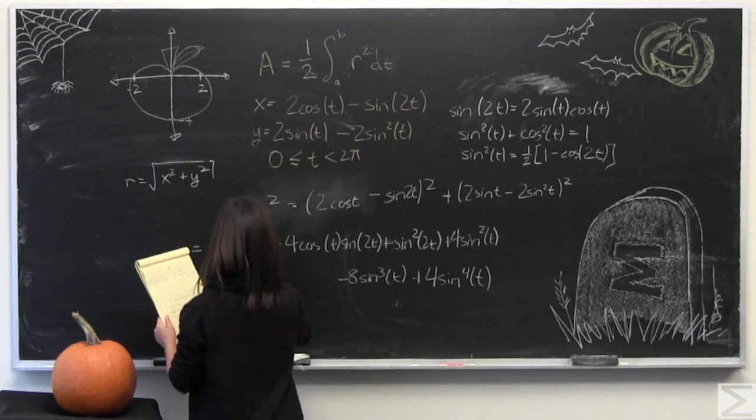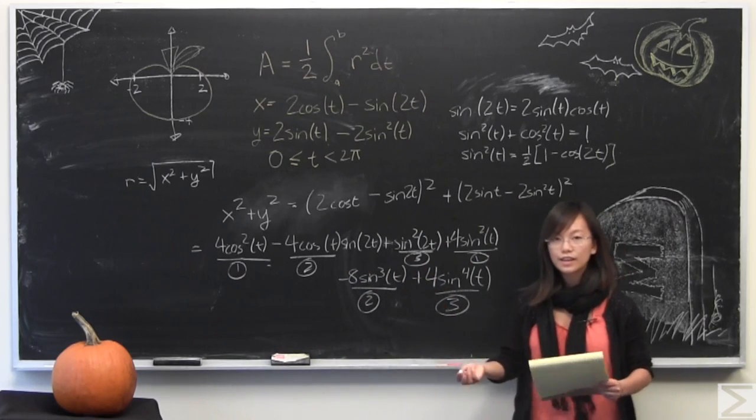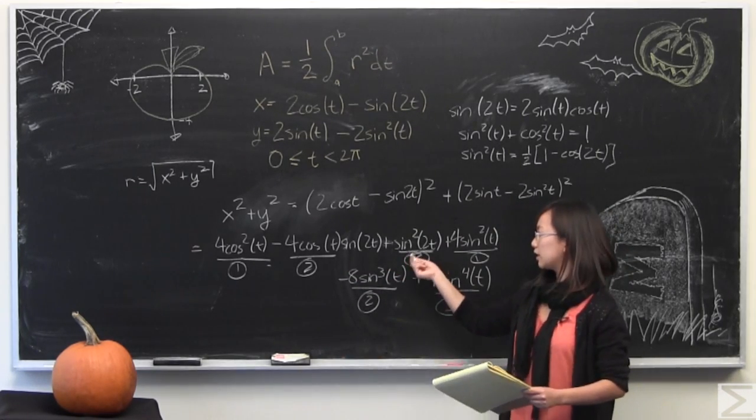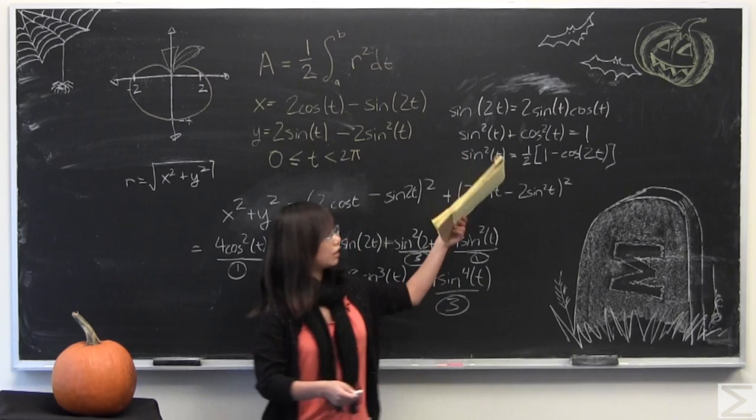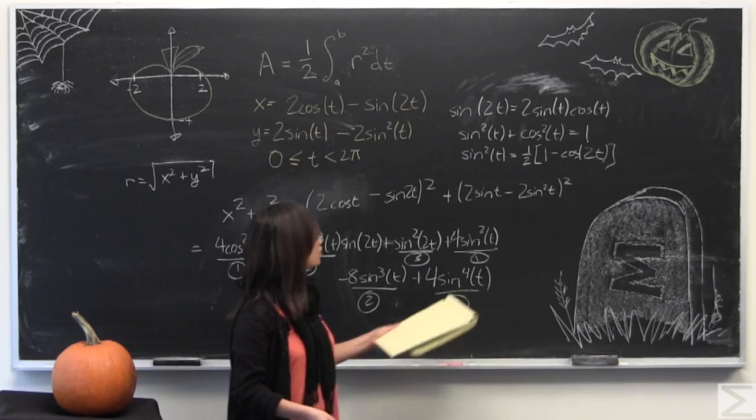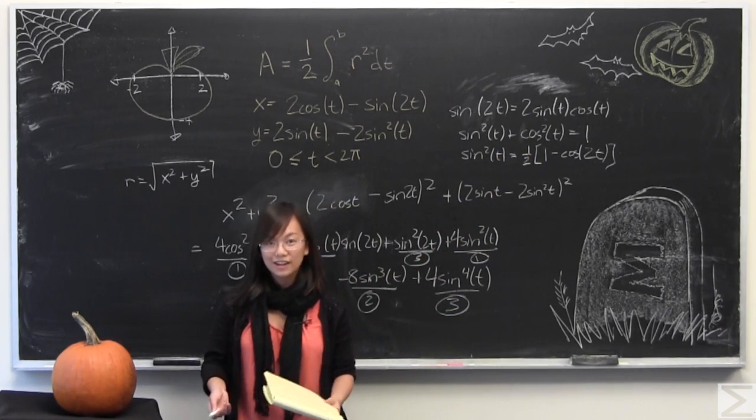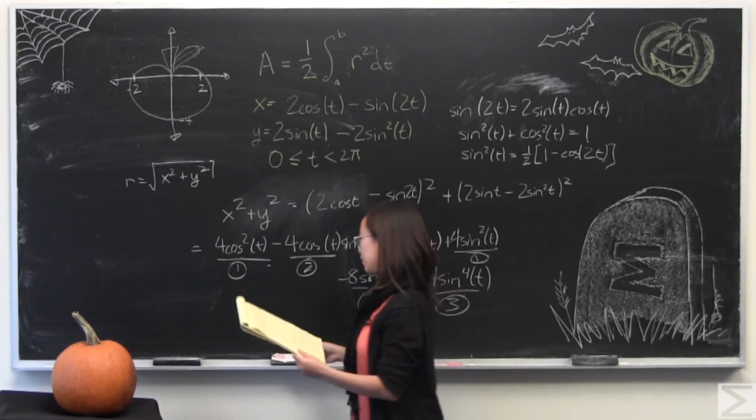So if you group it in this way you'll find that by evaluating the sine of 2t to be 2 times sine of t cosine of t and if you evaluate and group the others you can find that you can use this identity of sine squared plus cosine squared is equal to 1 and the expression just simplifies so very much.